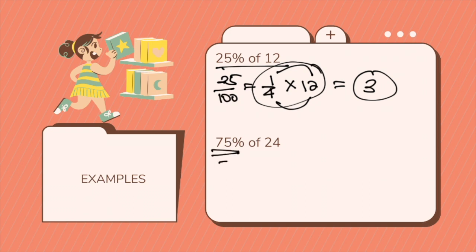The other example, we have 75%. So 75 divided by 100. This is equal to 3 fourths. So 3 fourths times 24. That will be 3 times 24 divided by 4, which will be 18.